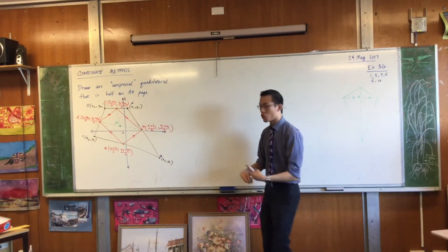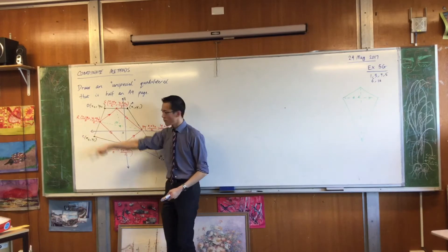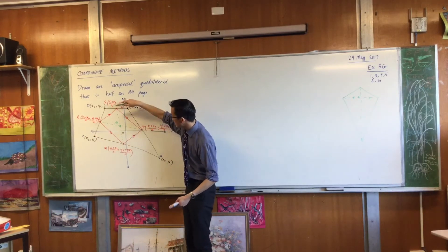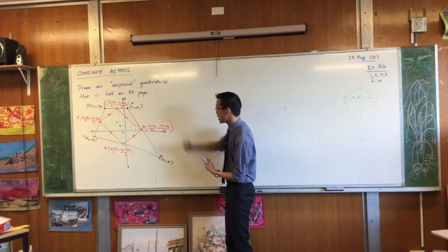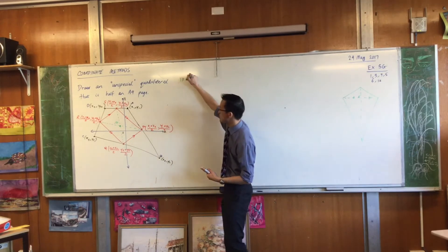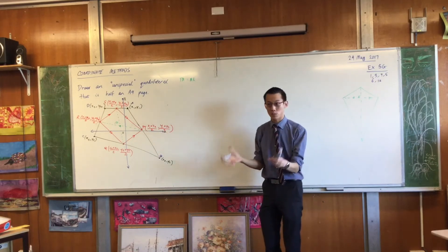Now, if I want to find out, if I want to show that M bisects PR and M bisects QS as well, then one of the ways I could do that is by proving that PM is equal to MR. That would be those lengths being equal. Do you agree?